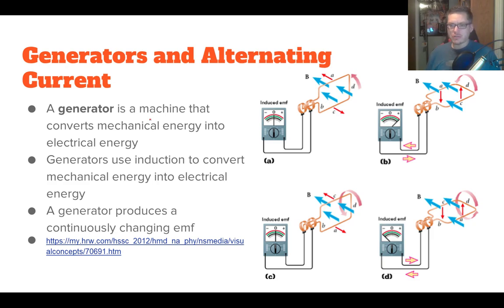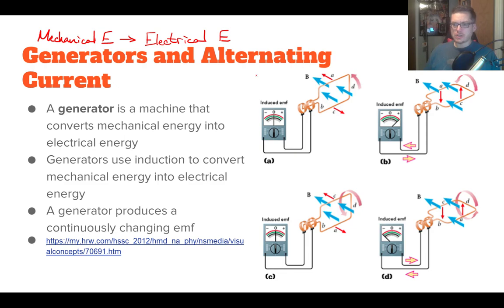So first we're going to talk about generators. Generators, specifically electrical generators, are things that take mechanical energy and turn it into electrical energy. The first thing you really need for any sort of generator is something to turn a wire.